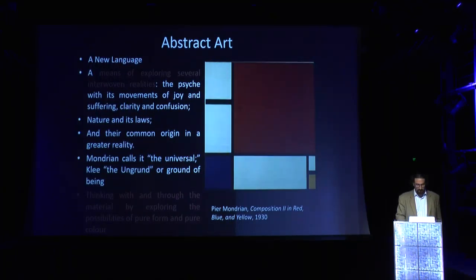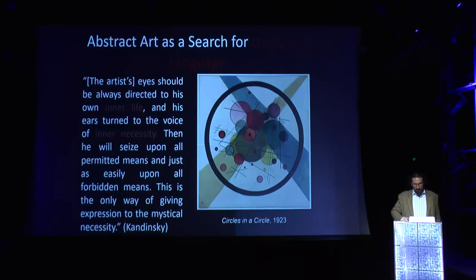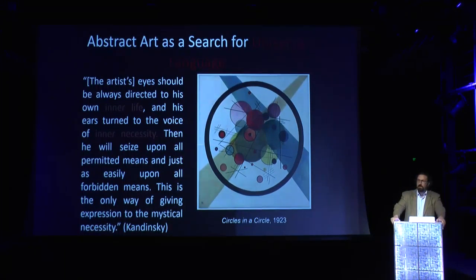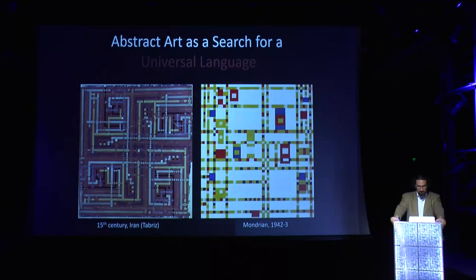The search for the abstract possibilities of the line was well underway in 20th century abstract art, exploring the possibilities of pure form and pure color. Something like Kandinsky's work shows the inner life of forms and the inner necessity — Kandinsky was convinced that certain lines, shapes, and colors have a definite effect on the soul. This is a universal language of form, and Grabar and others noticed very early the resemblance between this 20th century abstract search for a universal language and the universal language of geometry developed in the Islamic tradition.